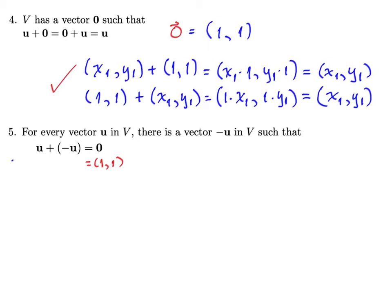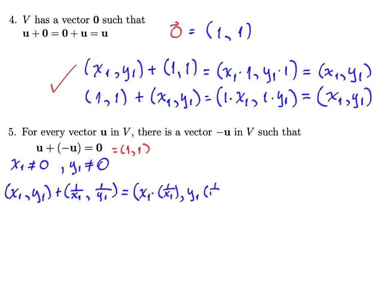So clearly, if we look at an ordered pair where the two components are both non-zero, then it's easy to see that under this weird addition, the additive inverse is the ordered pair of just the reciprocals. Because if I add (x₁, y₁) to the ordered pair (1 over x₁, 1 over y₁), and I multiply the corresponding components, I do get the zero vector. So as long as my components are both non-zero, we do have an additive inverse. So the additive inverse of (x₁, y₁) turns out to be the ordered pair of reciprocals.